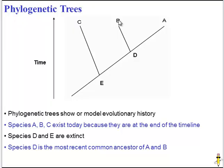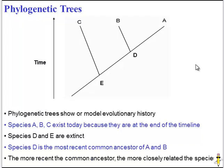So D is a common ancestor of B and A. And the more recent the common ancestor, the more closely related the species are. So B and A are more closely related than B and C, because B and A share a common ancestor that existed about halfway back on the timeline, whereas B and C share a common ancestor that existed far, far back on the timeline.